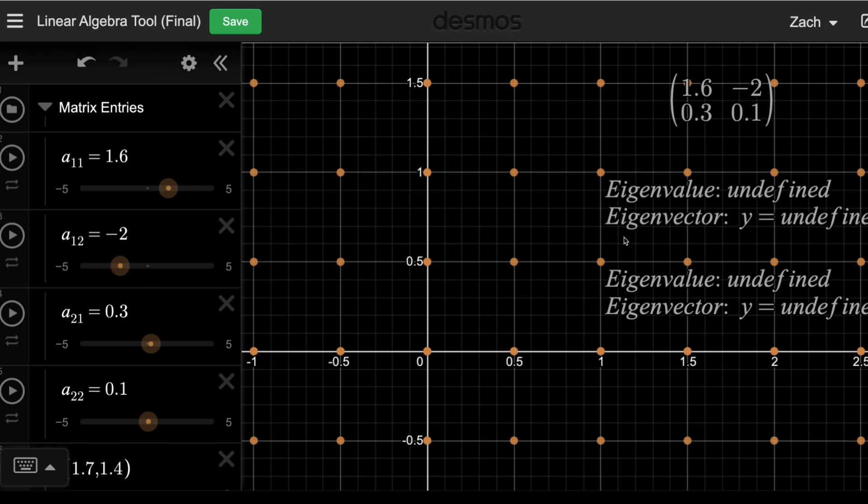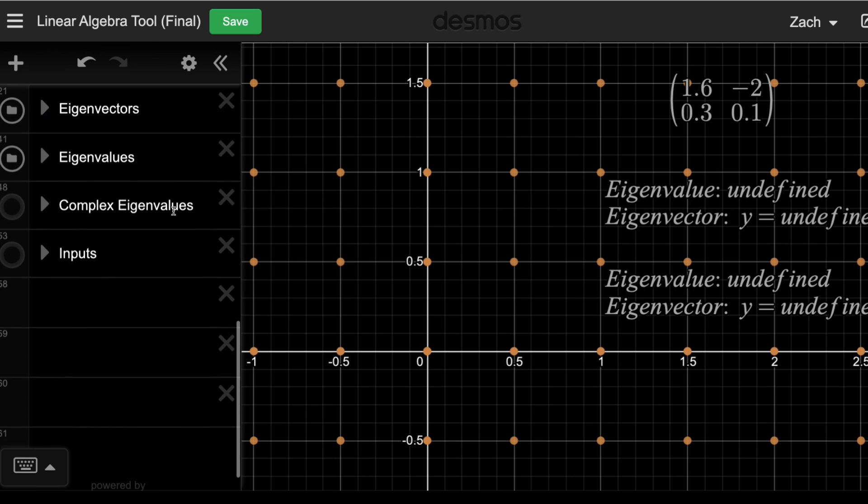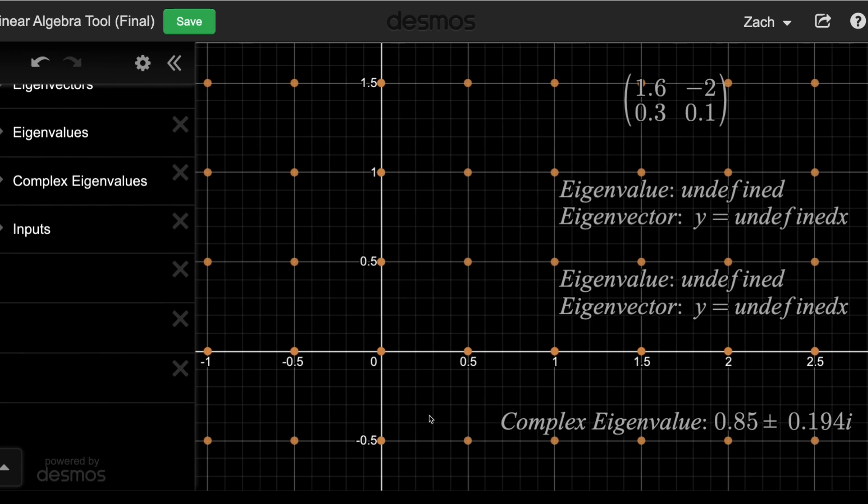Once you get to here, you'll find the eigenvalues and vectors are undefined, which just means they're imaginary. So if that happens, all you got to do is go down to this folder, complex eigenvalues, and it'll at least show those.